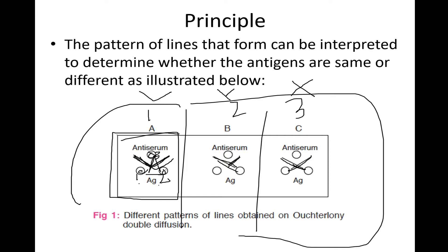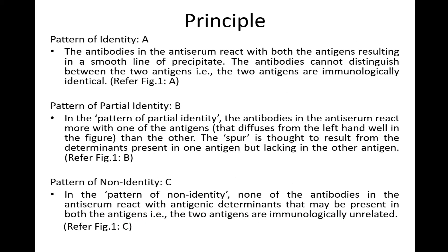The first pattern is the V-shaped line. In this case, the antibody cannot distinguish between the two antigens, meaning both antigens are identical to each other — they are immunologically identical. This pattern indicates the identicalness of the two antigens.